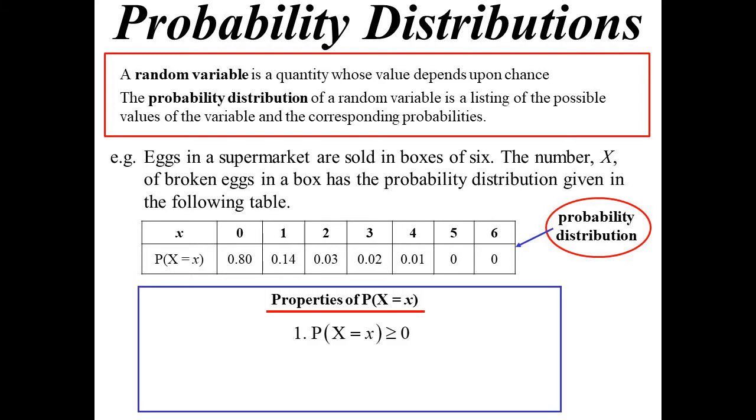Properties of the probability of X equaling little x: we know it's always going to be a positive number, we're talking about a probability. And we know the sum of all the probabilities should equal one. If the probability is the same, for instance rolling a dice, probability of a one, two, three, and so on, then we'd say that it's a uniform distribution.